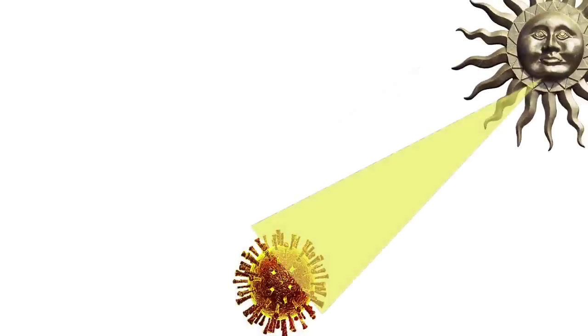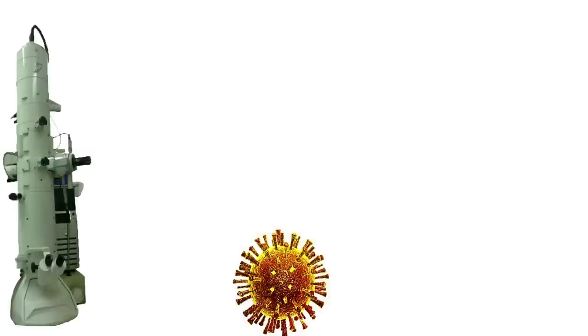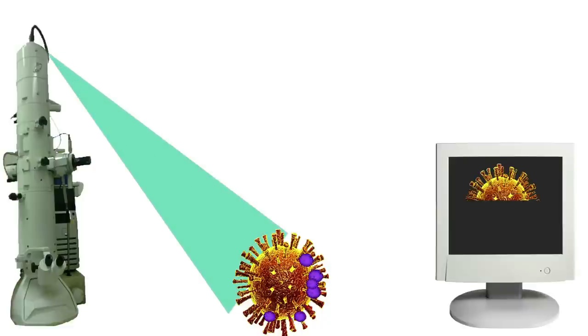Instead of using a beam of light to focus on a specimen, an electron microscope uses, you guessed it, a beam of electrons. This beam traces over the specimen, creating a replica of the object on a monitor.